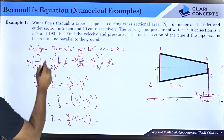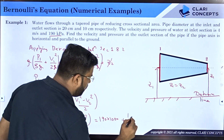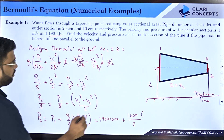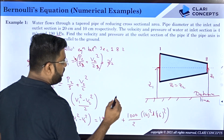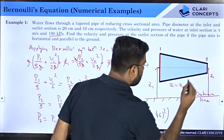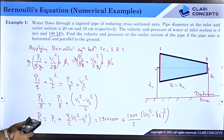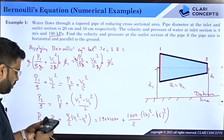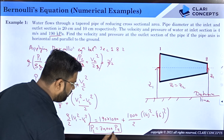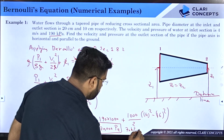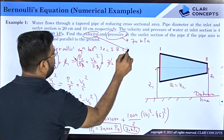Substituting values: P1 = 190 × 1000 Pa, ρ = 1000 kg/m³ for water, V1 = 4 m/s, V2 = 16 m/s. So P2 = 190,000 + (1000/2) × (4² − 16²) = 190,000 + 500 × (16 − 256) = 70,000 Pascals. Therefore P2 = 70 kPa.